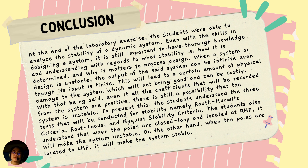To prevent this, the students understood the three tests that will be conducted for stability, namely: Routh-Hurwitz criteria, root locus, and Nyquist stability criteria. The students also understood that when the poles are closed-loop and located at the right half plane, it will make the system unstable. On the other hand, when the poles are located at the left half plane, it will make the system stable.